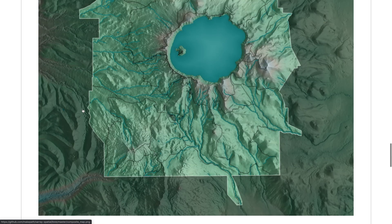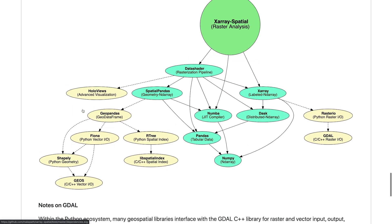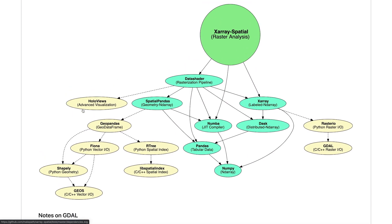X-Array Spatial exists within an ecosystem of tools, and some of the dependencies include X-Array, DataShader, Dask, Numba, and Pandas. We'll cover each of these libraries in subsequent videos. X-Array, which the library is named after, is a library which adds labeled dimensions to NumPy arrays, and the X-Array DataArray is the core data structure of X-Array Spatial.